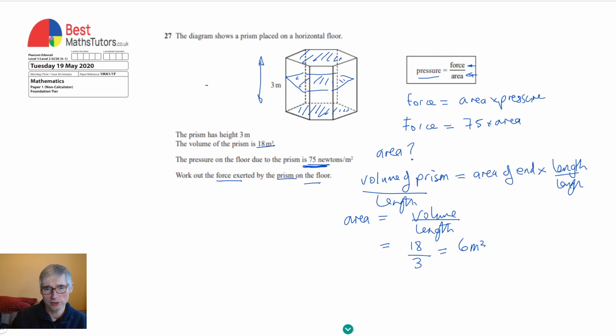Now I've got all the information I need to find the force. The force equals 75 times 6. I'll do that using column multiplication: 6 times 5 is 30, 6 times 7 is 42 plus 3 is 45. So the force is 450 newtons.